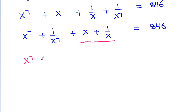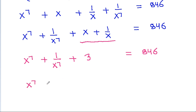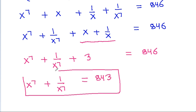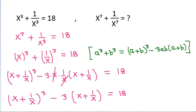We have x plus 1 by x equal to 3. So x power 7 plus 1 by x power 7 plus 3 equals 846. Therefore, x power 7 plus 1 by x power 7 equals 846 minus 3, which is 843.